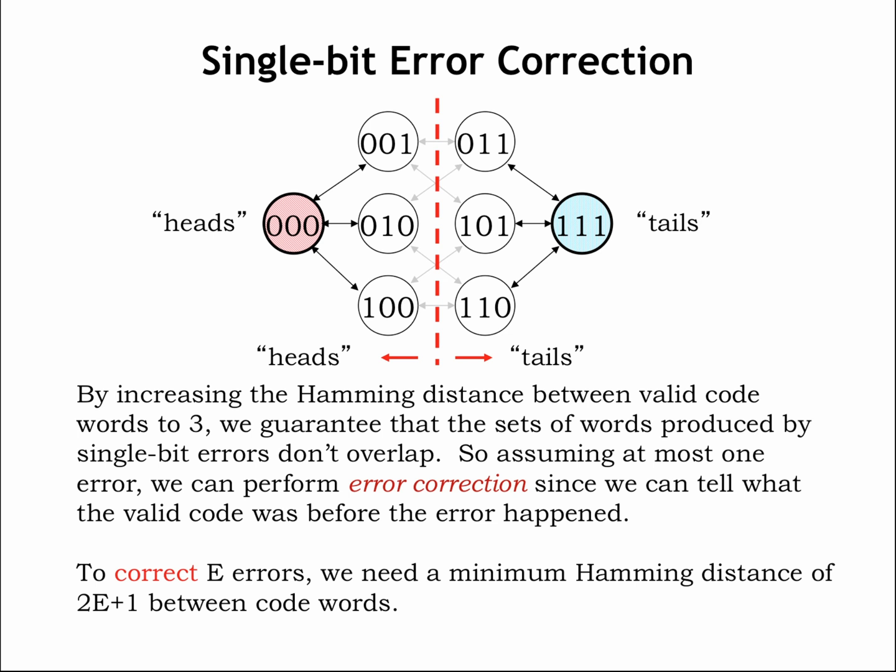Coding theory is a research area devoted to developing algorithms to generate codewords that have the necessary error detection and correction properties. You can take entire courses on this topic, but we'll stop here with our basic insights.